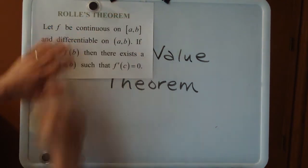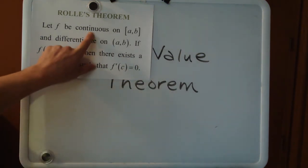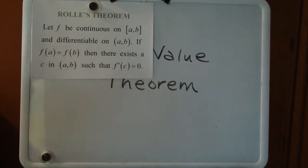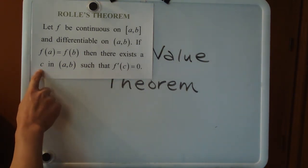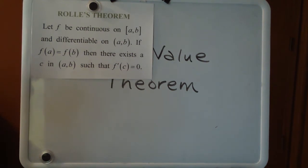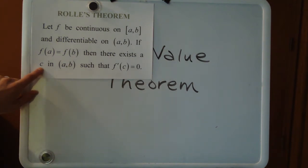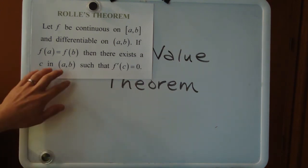We're going to read the statement and maybe draw a picture to make sure we understand what it says. This theorem is called Rolle's theorem, named after Michel Rolle. The theorem says we have a function that is continuous and differentiable — a continuous function with no gaps that's nice and smooth. The extra assumption is equality at the endpoints, so f of a equals f of b. The conclusion says there exists some c value in between a and b such that f prime of c equals zero. Much like the intermediate value theorem, this is an existence theorem — it doesn't tell you how to pin down c, it just ensures that one exists.